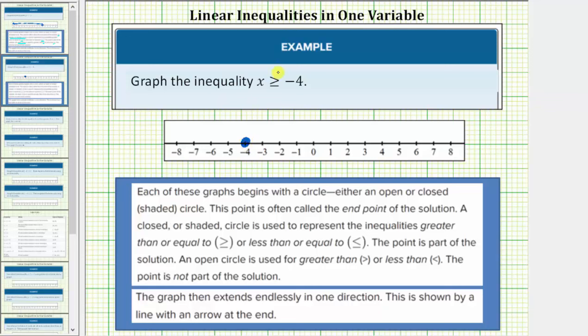And because x is greater than or equal to negative 4, we draw an arrow to the right where our values are greater than negative 4. This is the graph of the inequality x greater than or equal to negative 4. I hope you found this helpful.